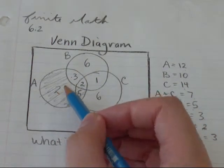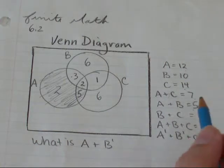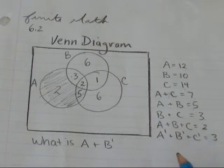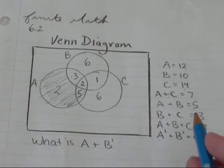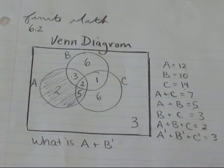And what I should have done but I forgot right away is I was given not A and not B and not C equals 3. So those 3 go on the outside.